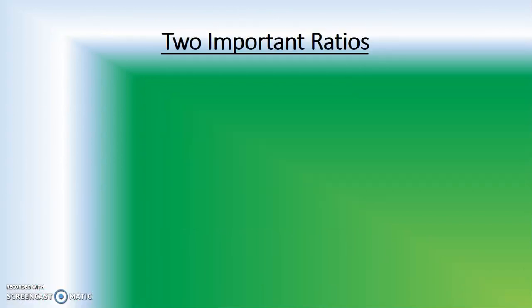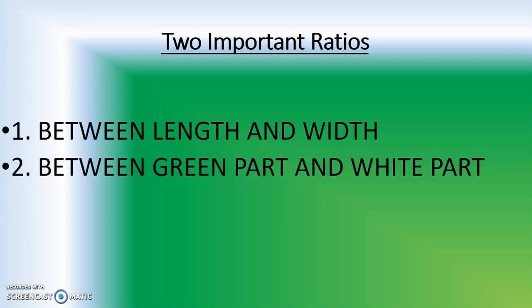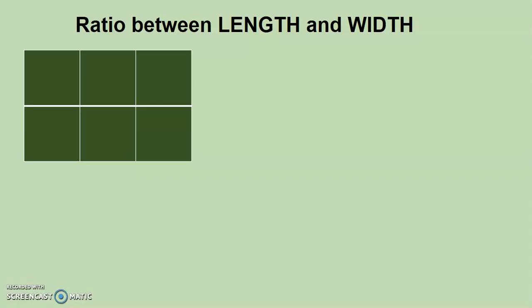There are two important ratios that you should be considering while drawing a flag. Number one is between length and width and the second ratio is between green part and the white part. Let's have a look at the ratio between length and width.